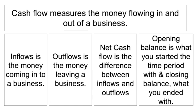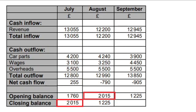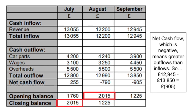You've also got your opening balance and closing balance. If I close December with £20,000 in my bank account, I start January with £20,000. In July, the closing balance is £2,015, and in August the opening balance is £2,015. For September's net cash flow: inflows were £12,945 but outflows were £13,850, so more money is flowing out than coming in. The difference is minus £905 — shown in brackets — meaning more money is leaving the company than what's coming in.